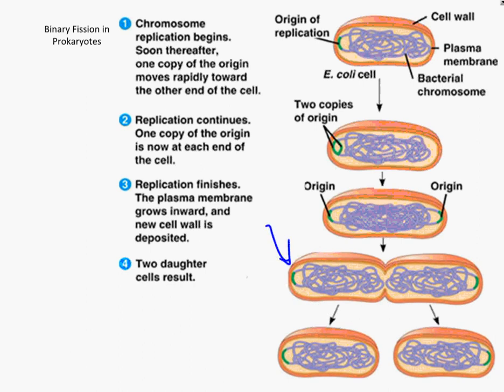A couple of things to note: at this point we still have one cell, and the cell has to grow in order to divide — there has to be more mass before the cell splits into two brand new cells. In eukaryotic cells, division is basically the same concept with a lot more pieces added. The two cells produced are called daughter cells, which is a technical term denoting that these two cells are identical to one another and also identical to the original parent cell.